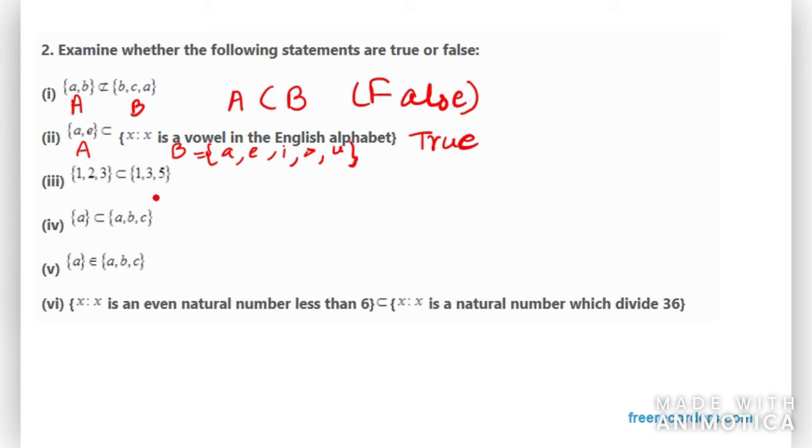Now moving on to third part we have {1,2,3} is a subset of {1,3,5}. Now you can see we have one, we have three, but we don't have two. So therefore this is again a false statement because the first set is not a subset of B.